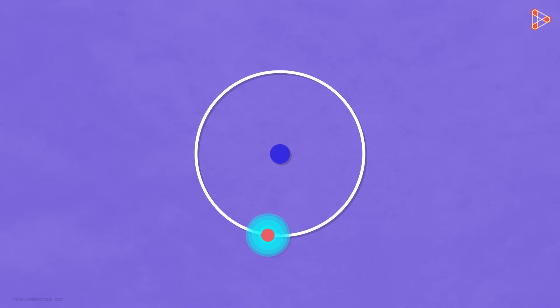Now if it continuously keeps radiating energy, then ultimately all the energy of the electron will get over and it will fall into the nucleus. This would result in high instability of the atom.